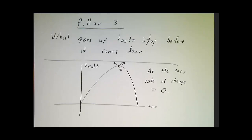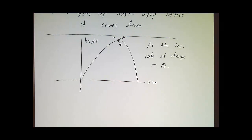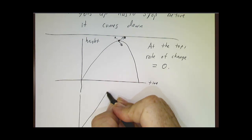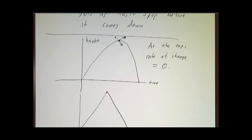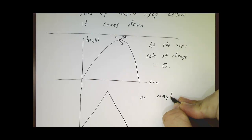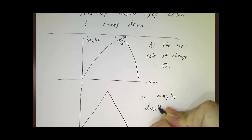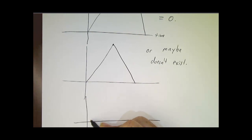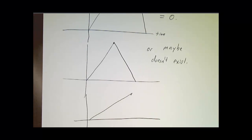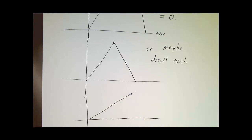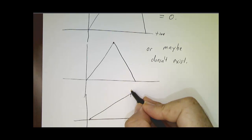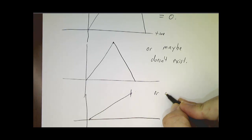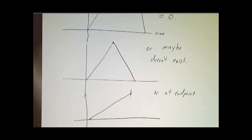Actually, there's a slight exception: it might not exist. If you had something that bounces instantly off the ceiling, then at the top it doesn't have a rate of change. And there's one more exception, which is that it could keep going up for as long as you watch — say, during those two seconds it kept going up and up — and then the maximum would be at an end point.